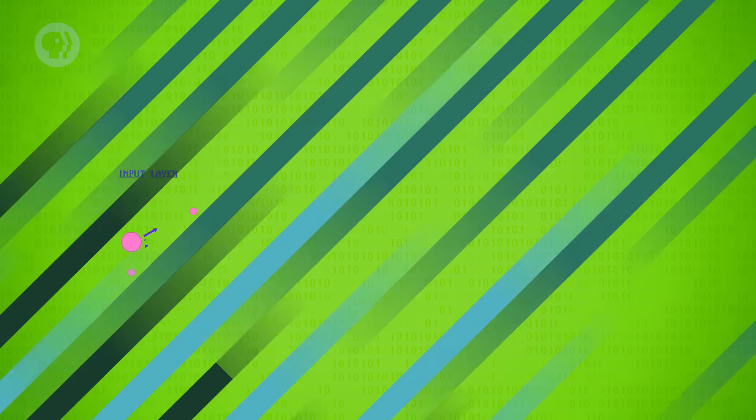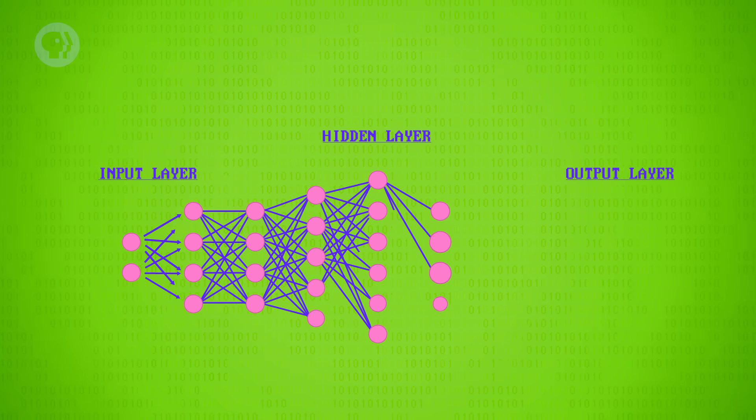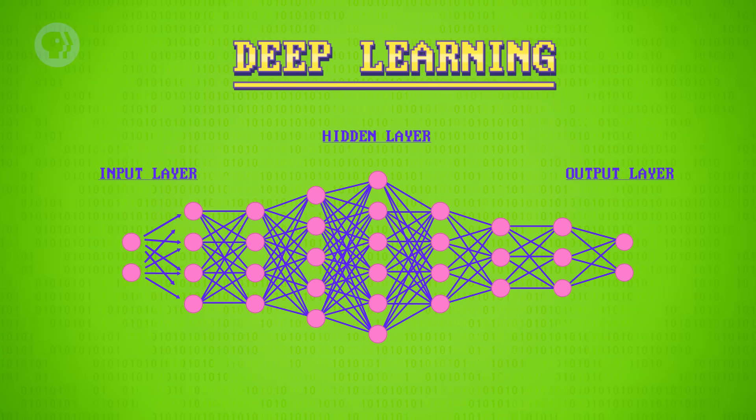Importantly, the hidden layer doesn't have to be just one layer. It can be many layers deep. This is where the term deep learning comes from.